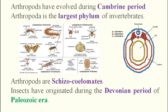Arthropods are schizocoelomate. 'Coelo' means body cavity — all arthropods have a body cavity. The gut is located at the center, with body fluid, dorsal blood vessel, and associated structures. We will discuss more about this in the physiology section.